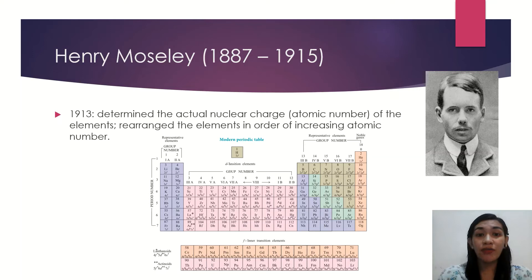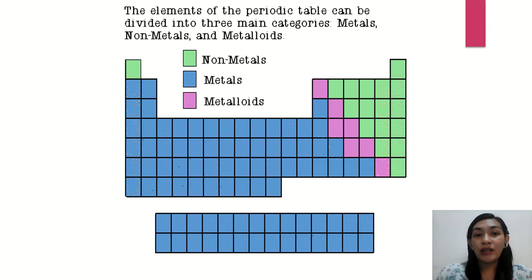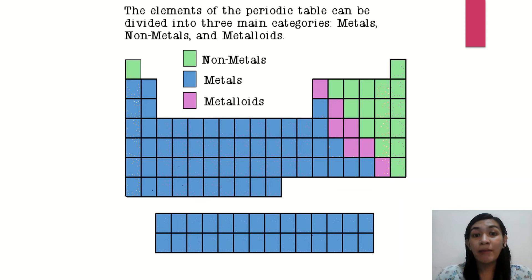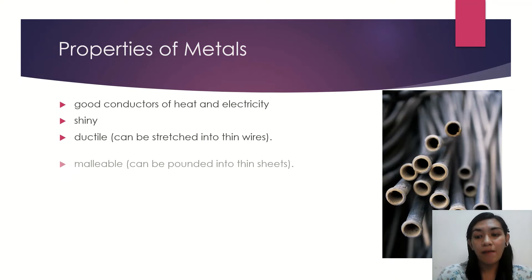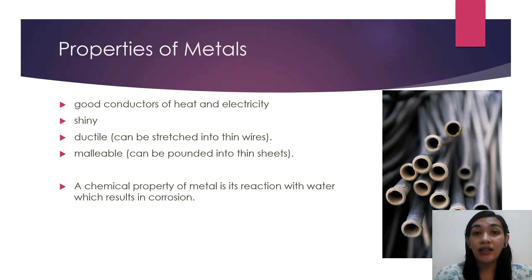Those are some of the chemists who contributed to the development of our periodic table. Now, the elements of the periodic table can be divided into three main categories: metals, non-metals, and metalloids. The green ones are the non-metals, the blue are the metals, and the metalloids are represented by the purple boxes. Metals are good conductors of heat and electricity; they are shiny, ductile, and malleable. A chemical property of metals is their reaction with water, which results in corrosion.